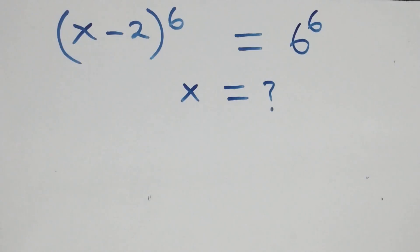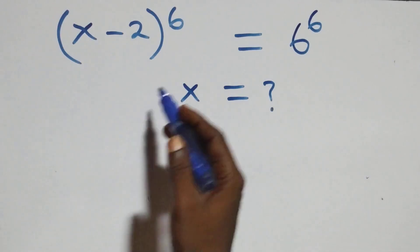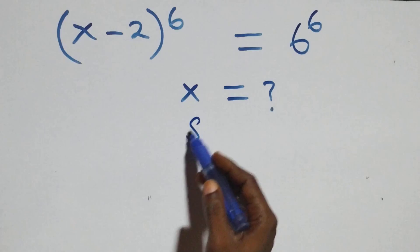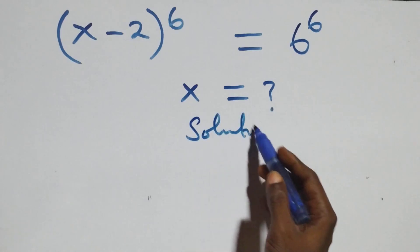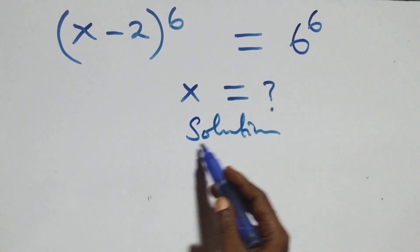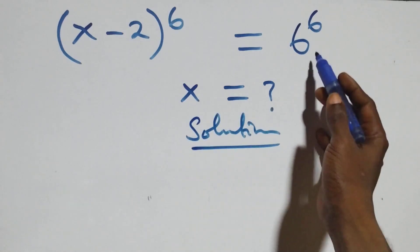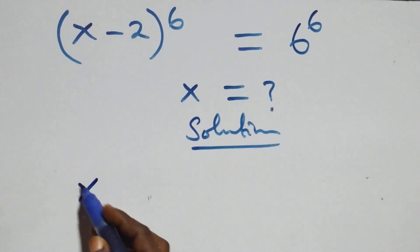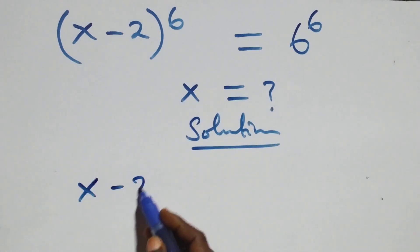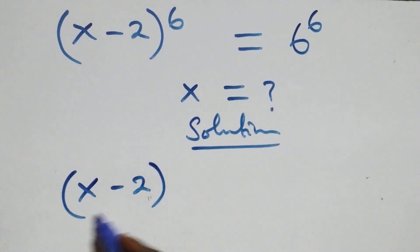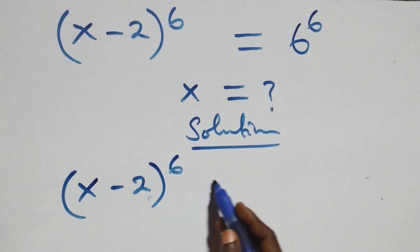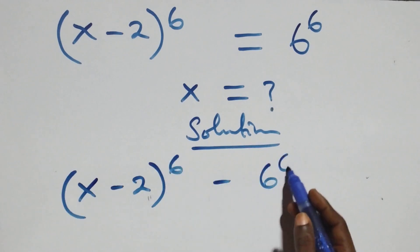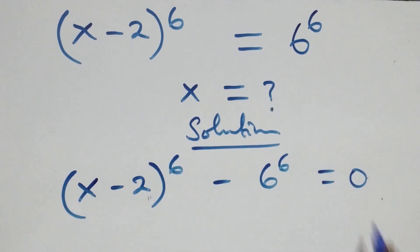Hello, you are welcome. How to solve this nice exponential equation. What we have here: we take 6 raised to power 6 to the left-hand side and we have x minus 2, raised to power 6, minus 6 raised to power 6, now equals to 0.